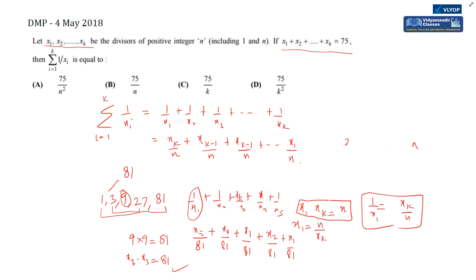Taking denominator n common, the numerator is sigma of xi, which equals 75 from the question. So we get 75/n.